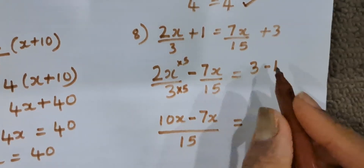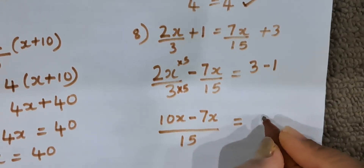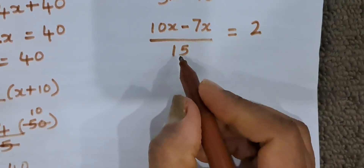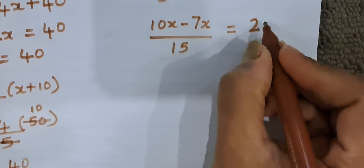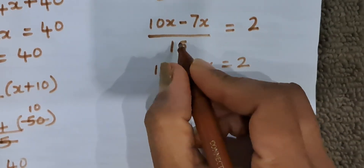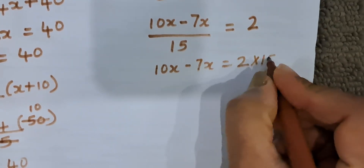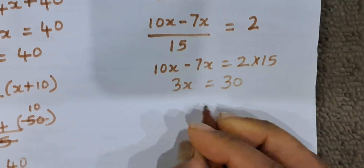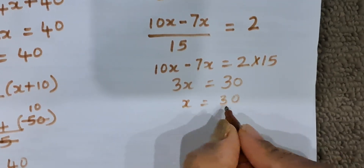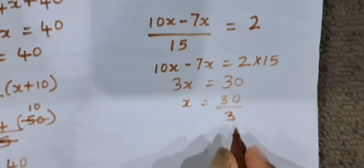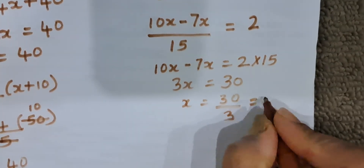So, 10x minus 7x upon 15 is equal to 3 minus 1, that is 2. We will take 15 on the right hand side, so 10x minus 7x is equal to 2 multiplied by 15. 10x minus 7x is 3x. 3x is 30. So, the value of x is 30 upon 3, which is 10.